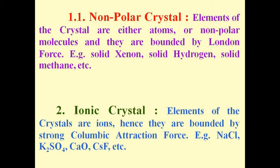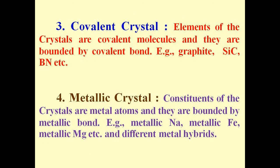Number two: ionic crystals. Their constituents are ions; hence the attraction forces are coulombic forces. For example: sodium chloride, potassium sulfate, calcium oxide, cesium fluoride, etc. Number three: covalent crystals. Their constituents are bounded by covalent bonds — for example: graphite, silicon carbide, boron nitride, etc. Number four: metallic crystals. The constituents are metal atoms bounded by metallic bonds — for example: metallic sodium, metallic iron, metallic magnesium, and different metal alloys.